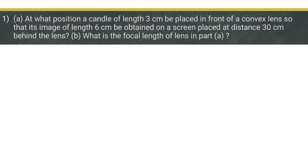Numerical number one: at what position should a candle of length 3 centimeters be placed in front of a convex lens so that its image of length 6 centimeters is obtained on a screen placed at a distance of 30 centimeters behind the lens? What is the focal length of the lens in part A?